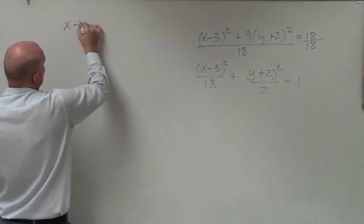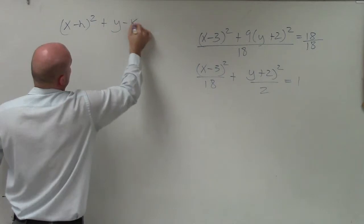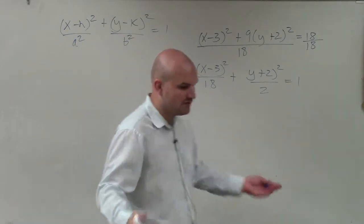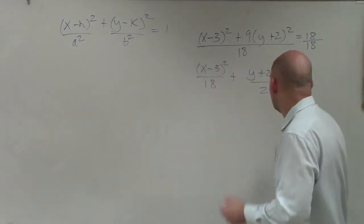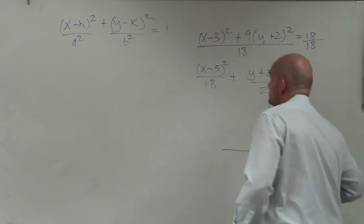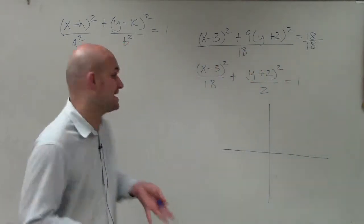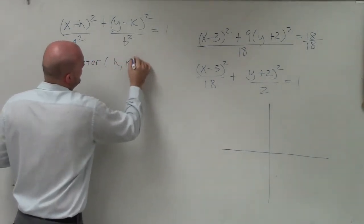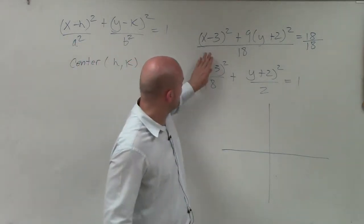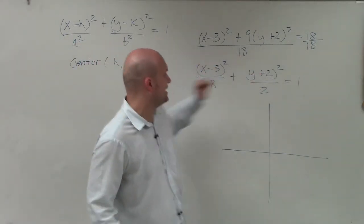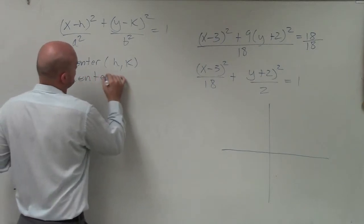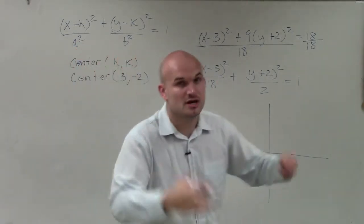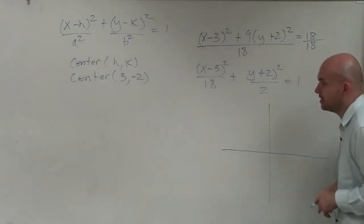Let's write the standard form for when we have a major axis under the x: x minus h squared over a squared, plus y minus k squared over b squared equals 1. Now, the center of an ellipse is simply h comma k — it's the opposite of h and the opposite of k. So the center in this problem is 3 comma negative 2.